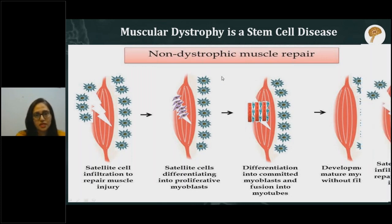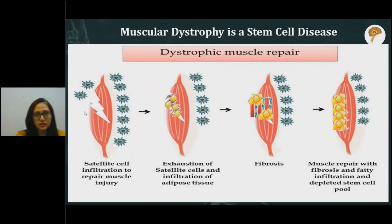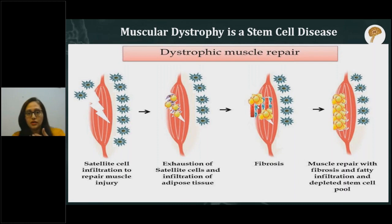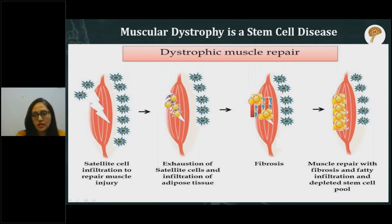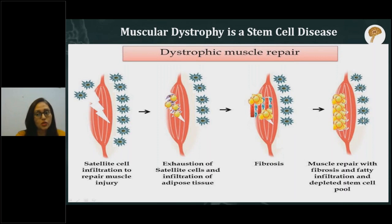The same process happens in dystrophic muscle: stem cells repair the damage. But two things differ compared to non-dystrophic muscle repair. First, there is fibrosis — muscle tissue is not replaced by new muscle tissue alone, but also by adipose or fat tissue and fibrotic tissue. Second, the number of satellite cells is much less compared to non-dystrophic muscle. This fibrotic process and depletion of stem cells are contributing factors to why muscular dystrophy progresses and weakness worsens.